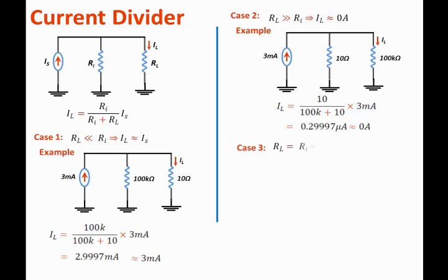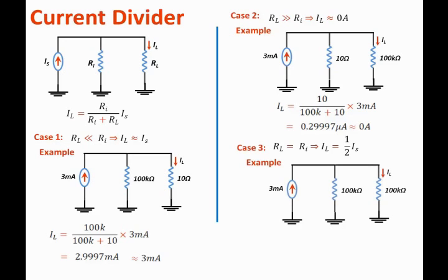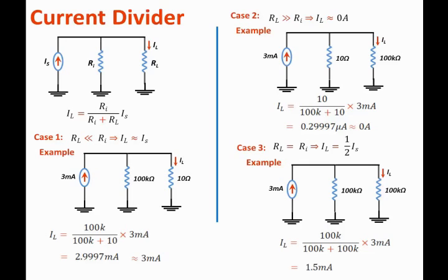The third condition is when the load resistance equals the source resistance. Under this condition, the load current will equal one half the total current from the source. For example, with a 3 milliamp current source supplying two resistors in parallel, each one 100 kilo ohms, the load current equals 100k over 100k plus 100k, times 3 milliamps, which equals 1.5 milliamps. So if the two resistors are equal, the current splits equally across them.